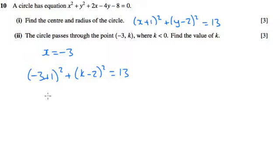So minus 3 plus 1 is minus 2, minus 2 squared is 4. So we've got 4 plus k minus 2 squared equals 13. And we can solve this equation really easily.